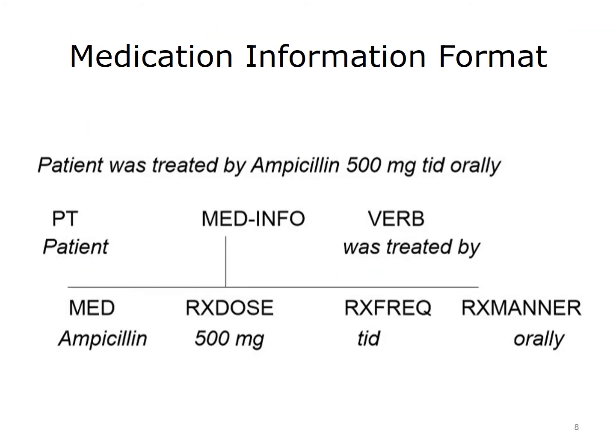This slide shows an example for one of the information formats. The medication information format is one of the simpler ones. The original text in the clinical document was: 'patient was treated by ampicillin 500 mg TID orally.' The medication information format has slots for the patient, the medication, the dose, the frequency, the manner in which it was given, and the verb. The text of the sentence mapped into those slots and gives a complete picture of one medication used by this patient.